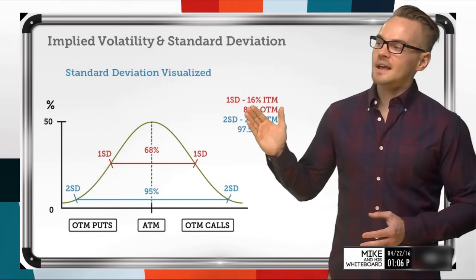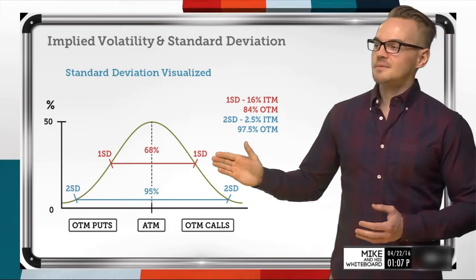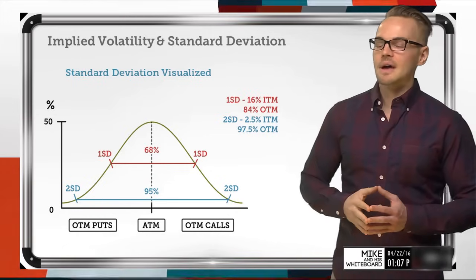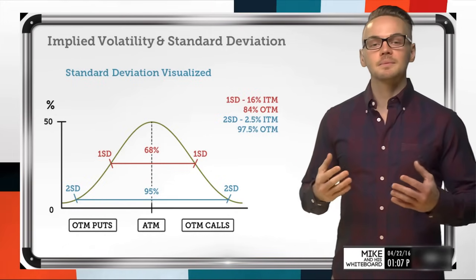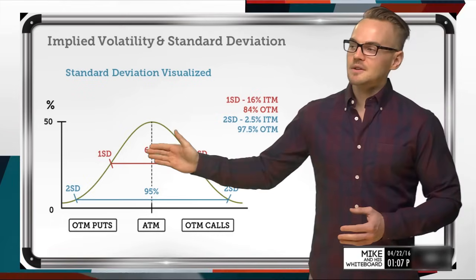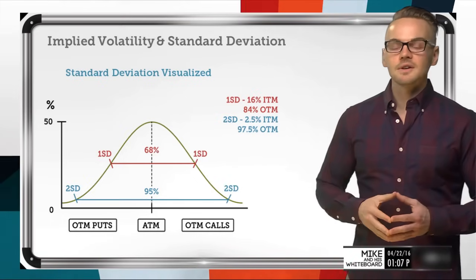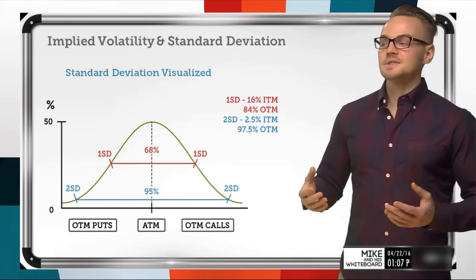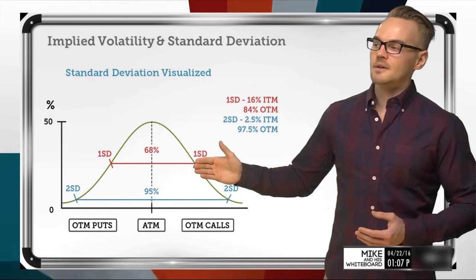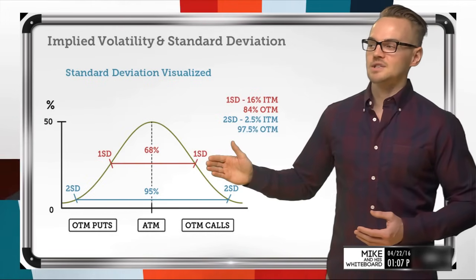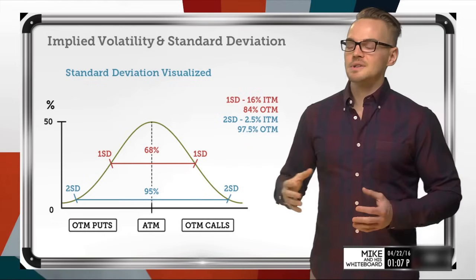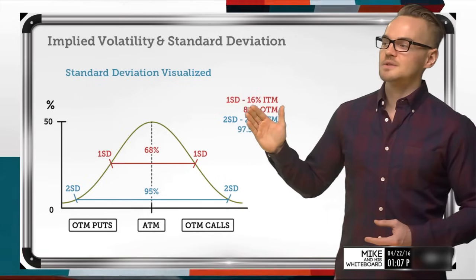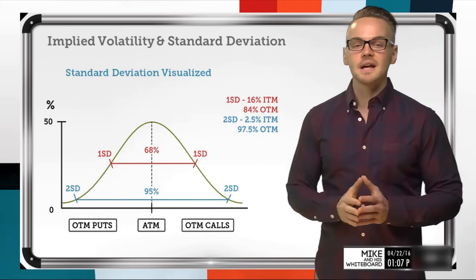What you'll see is that if I add those two values together — 16% on this side and 16% on that side — I now have a 32% probability of being in the money. Looking at that value: 68% compared to 32%, when I add those two values together I get 100%. So if I have a 32% probability of being in the money with one standard deviation, I must have 68% probability of being out of the money — that's how these two values relate.